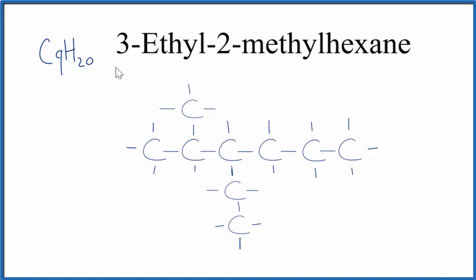So this is our structural formula for 3-ethyl-2-methylhexane. We have our long chain, hexane, and on the second carbon we have the methyl group. On the third carbon we have the ethyl group. We list ethyl first because it comes before methyl in the alphabet.